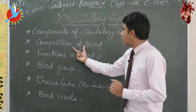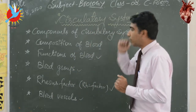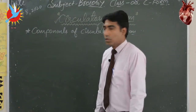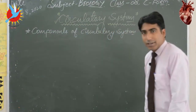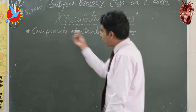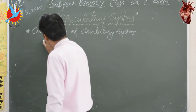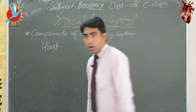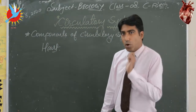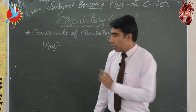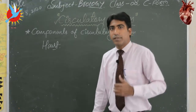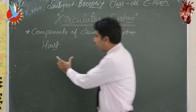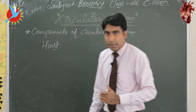Now we are going to discuss the components of the circulatory system. The circulatory system is made up of, first, the heart. Our heart is a basic organ of the circulatory system — it works like a pump. We will discuss this portion deeply later on in this chapter.